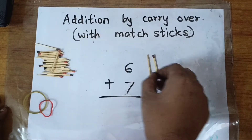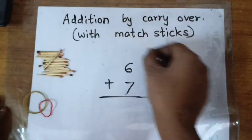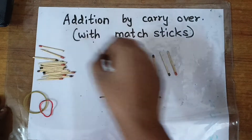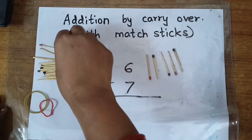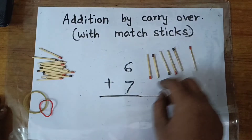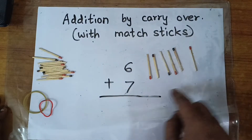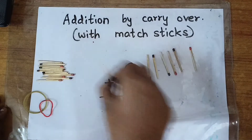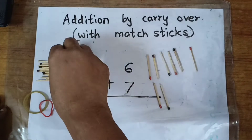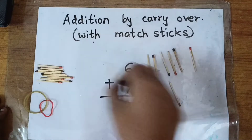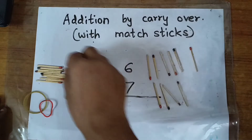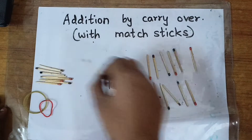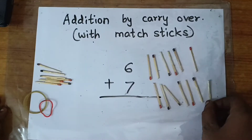Counting 6 sticks: 1, 2, 3, 4, 5, 6. That is 6 sticks. Now 7 sticks: 1, 2, 3, 4, 5, 6, 7.